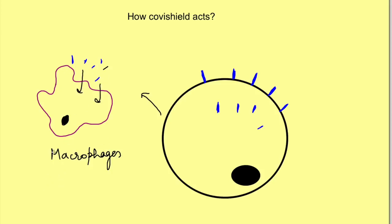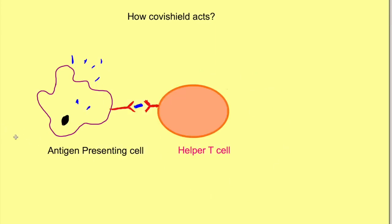These macrophages then present these small fragments to other cells — that is why they are also known as antigen presenting cells. They are presenting the antigen to other cells, specifically to helper T cells. This is a signal to the helper T cells that this kind of foreign antigen has come and they need to be active against it.